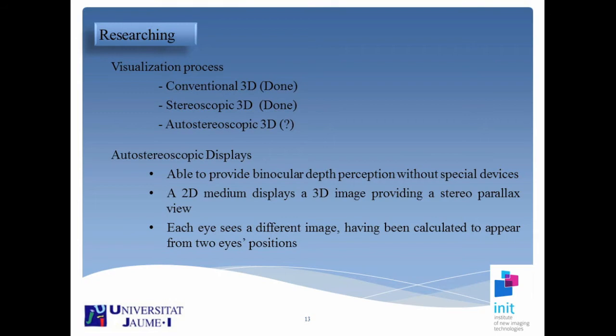Regarding the visualization process, we already have systems using conventional 3D and stereoscopic 3D. But what about auto-stereoscopic 3D? Auto-stereoscopic is a recent technique able to show 3D without any special device worn by the viewer. With the introduction in our lab of an auto-stereoscopic display, it increased our interest in making a visualization system using this kind of device. It provides binocular depth perception without a special device — a 2D medium displaying a 3D image providing a stereo parallax view — and each eye sees a different image calculated to appear from two-eye positions.